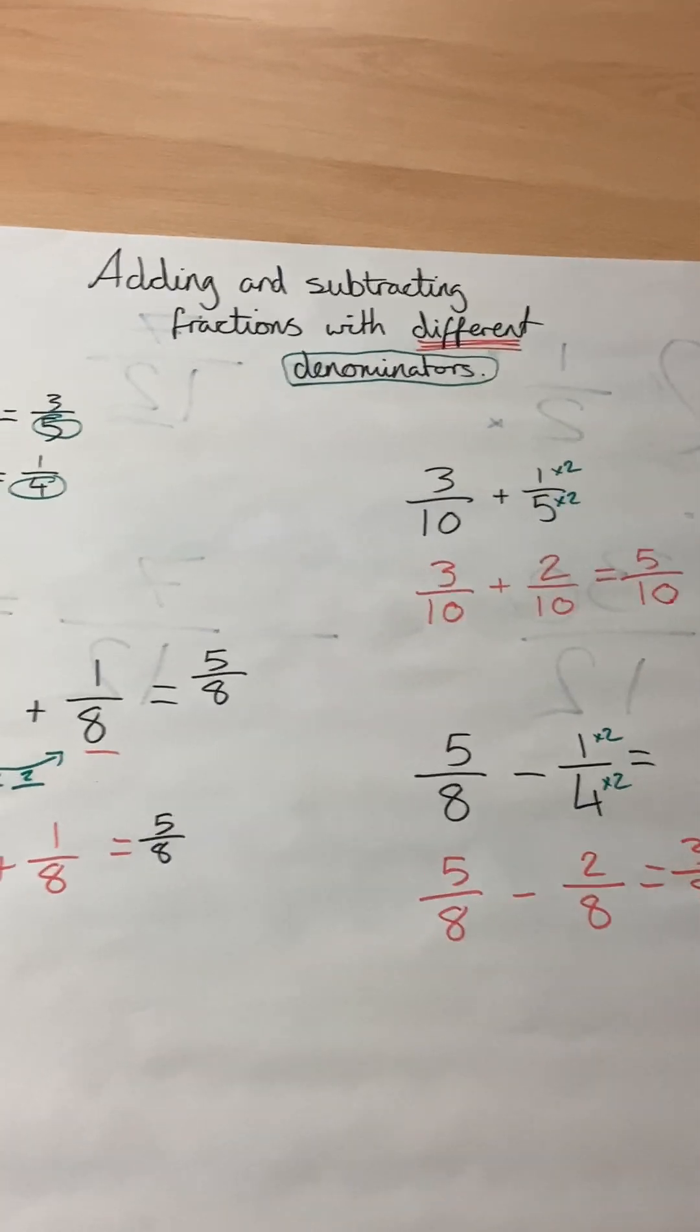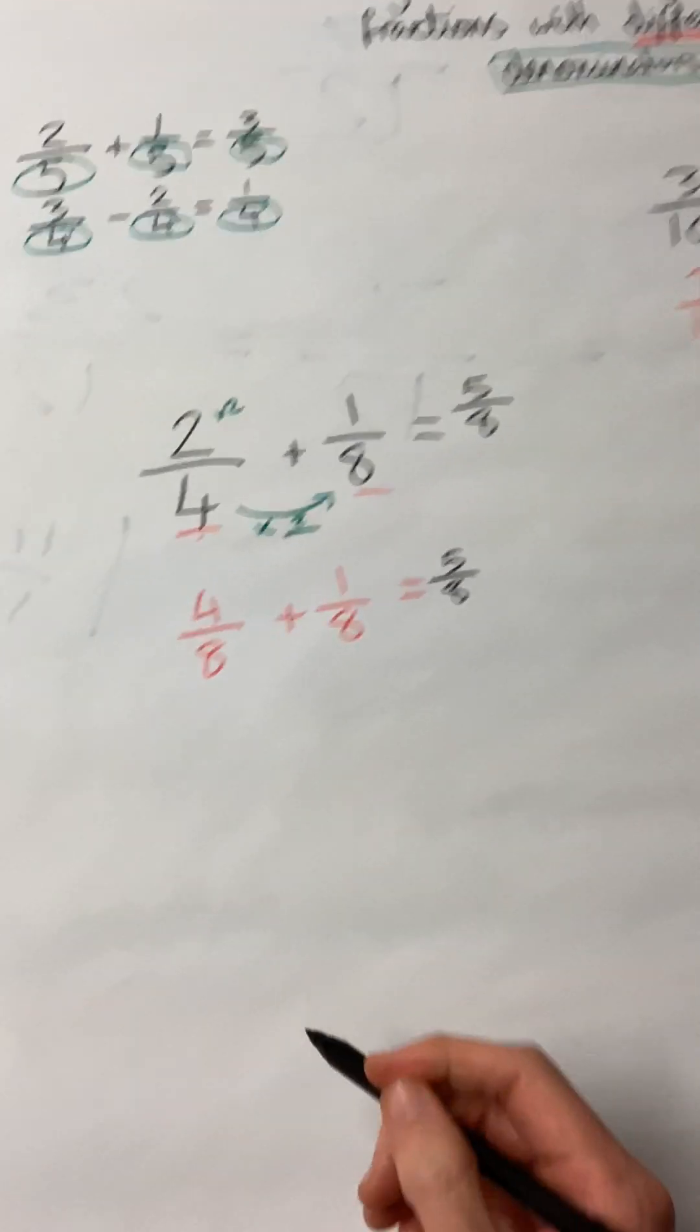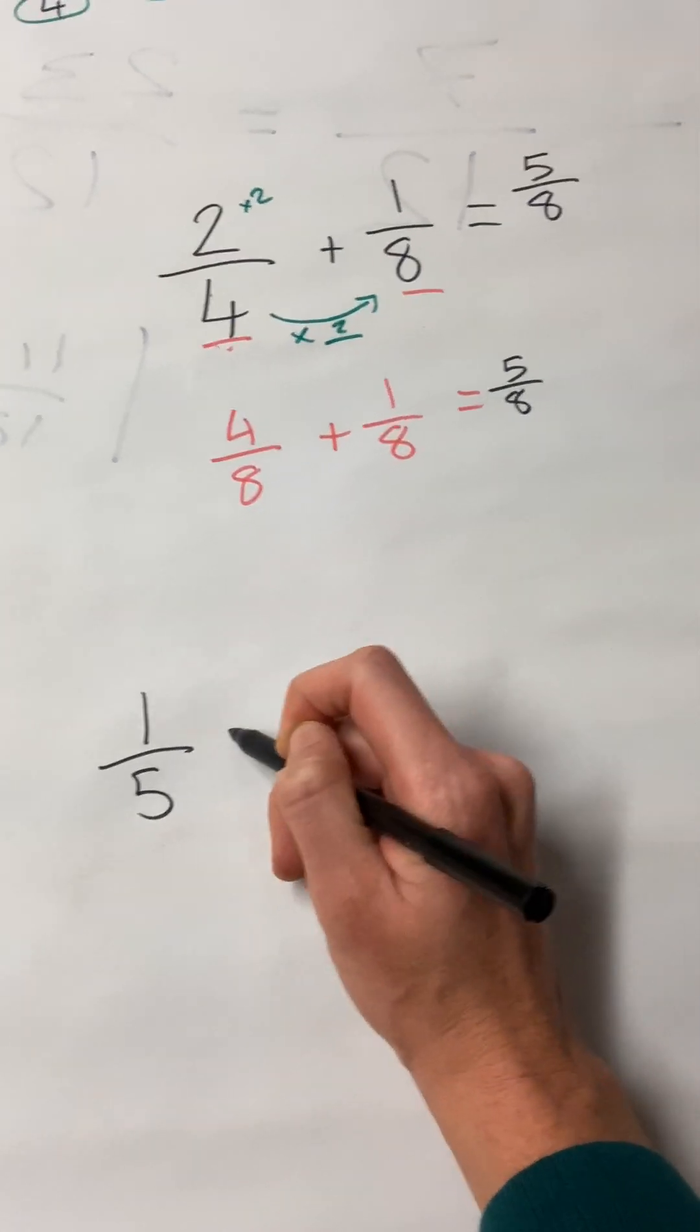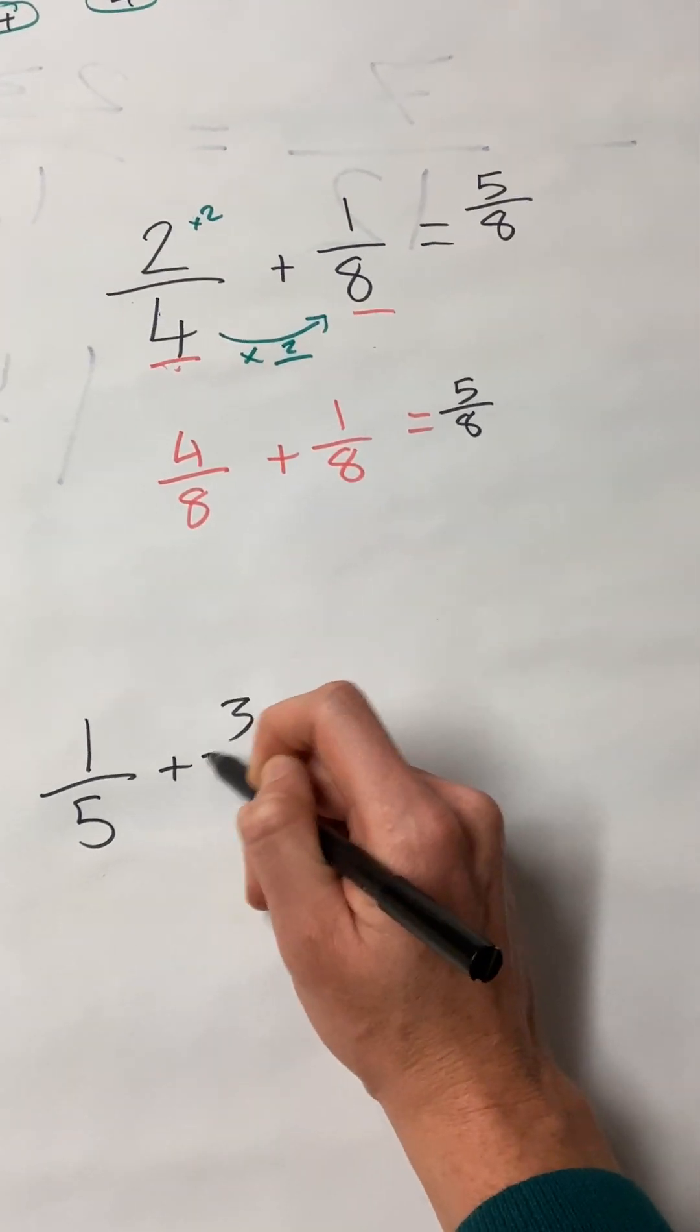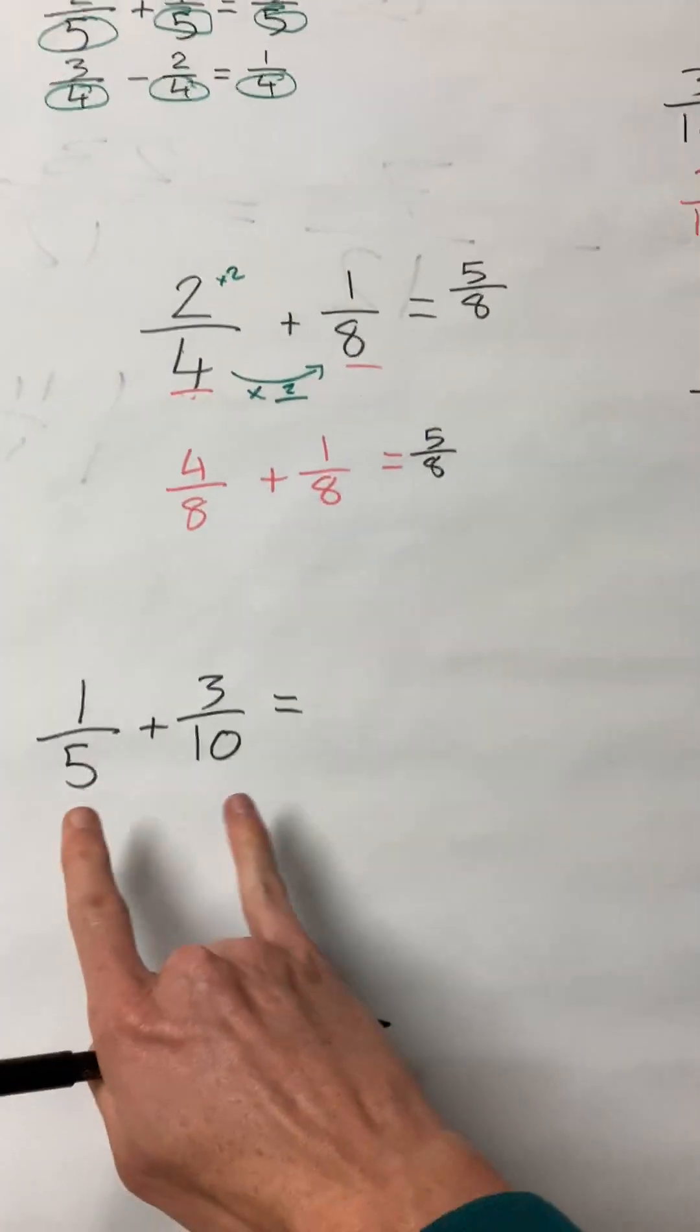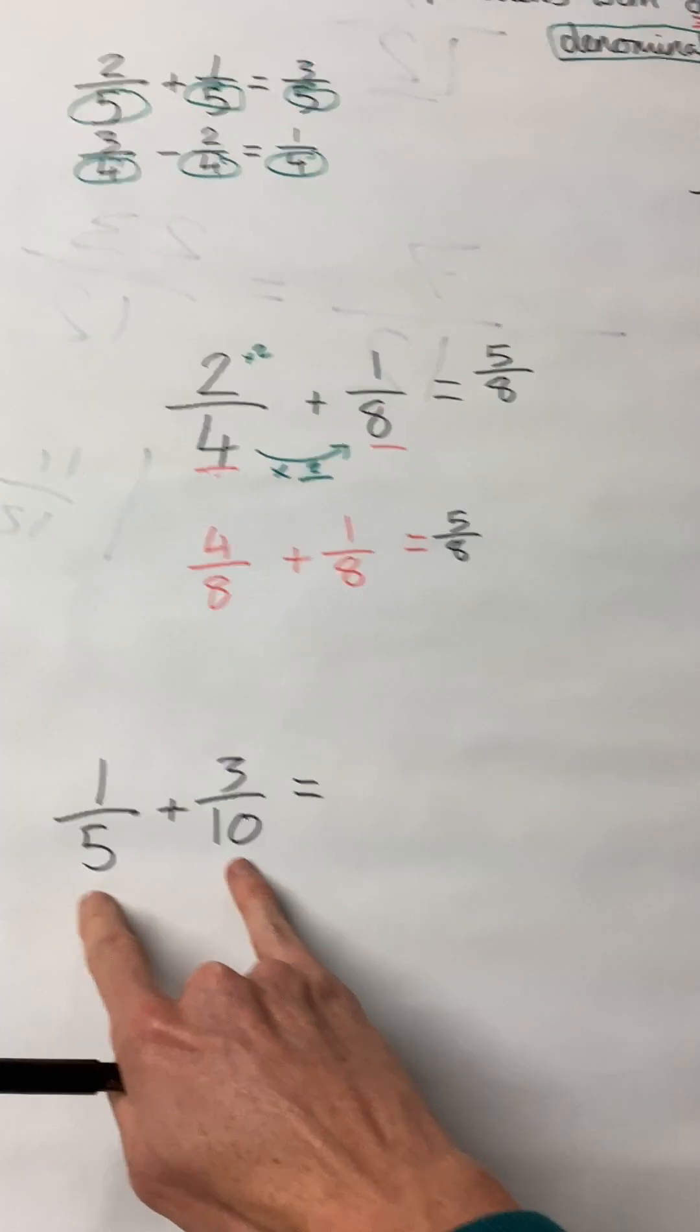So here are some challenges I want you to try and do. One-fifth plus three-tenths equals. They're not the same, so can you make them the same?